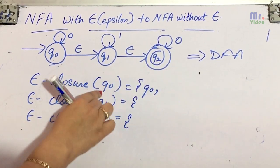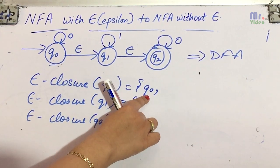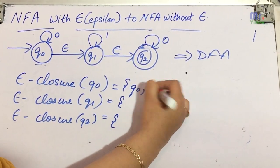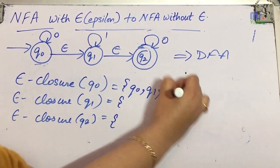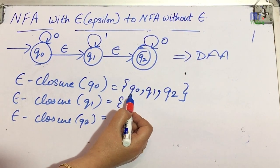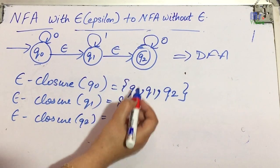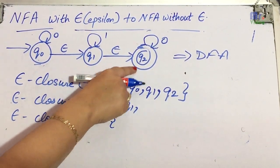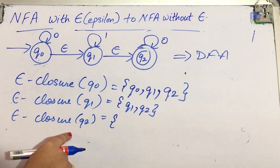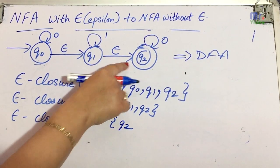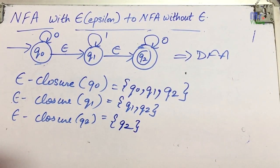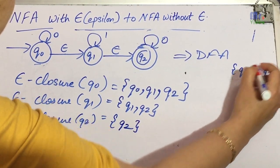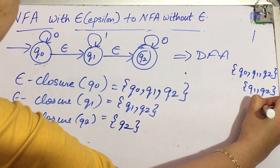The epsilon closure first of all includes the state itself, plus all states reachable using epsilon moves. So epsilon closure of q0 = {q0, q1, q2} because q0 with epsilon goes to q1, and q0 with epsilon also goes to q2. Epsilon closure of q1 = {q1, q2} because q1 with epsilon goes to q2. Epsilon closure of q2 = {q2} because there is no state reachable from q2 using epsilon.